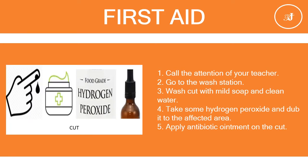For cuts, firstly, you need to call the attention of your teacher. Second, go to the wash station. Third, wash the cut with mild soap and clean water. Fourth, take some hydrogen peroxide and dab it to the affected area. Fifth, apply antibiotic ointment on the cut. Why do we need to apply hydrogen peroxide? This is to disinfect the affected area. Why antibiotic ointment? This is to prevent infection.